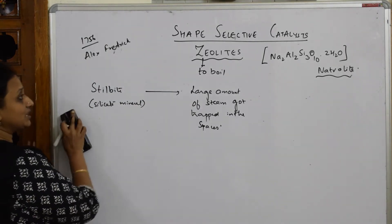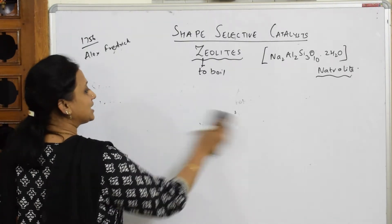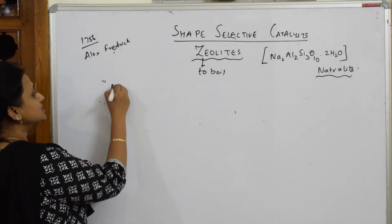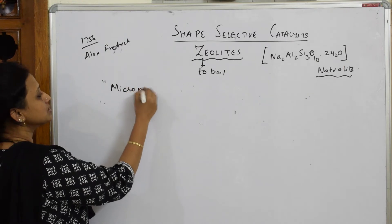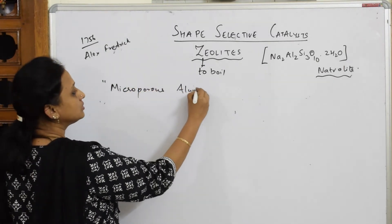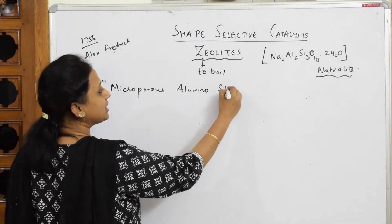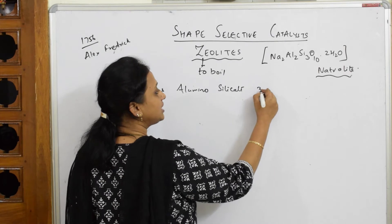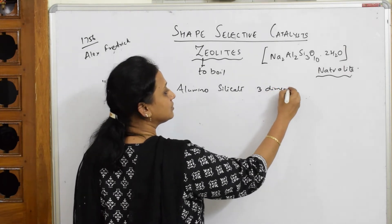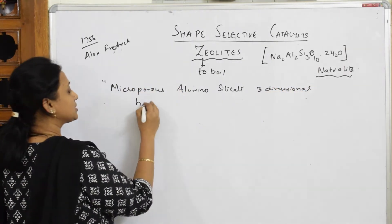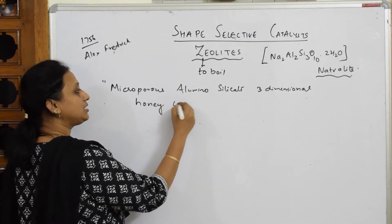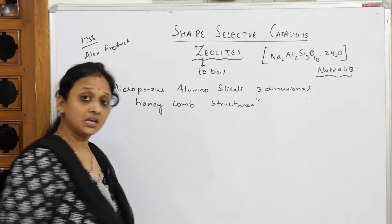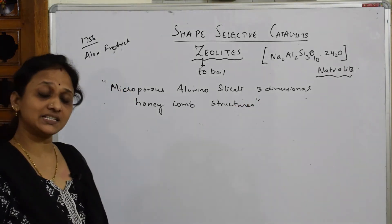For a one-mark answer, zeolites are defined as microporous aluminosilicate three-dimensional honeycomb structures.